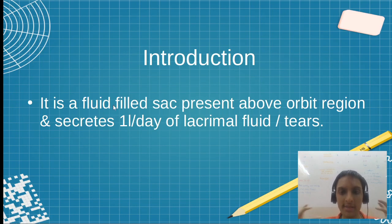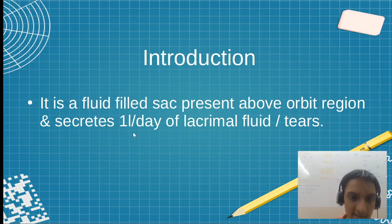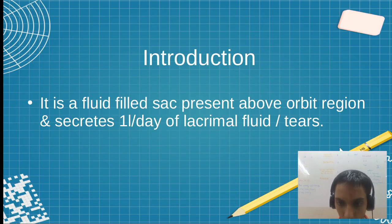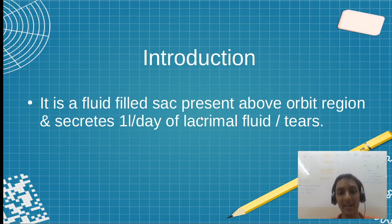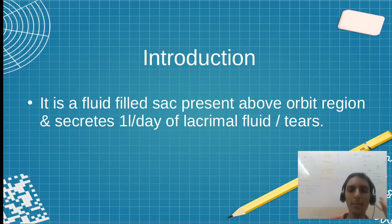We will see the introduction. What is this lacrimal apparatus? Basically, it is a fluid-filled sac present about the orbit and secretes lacrimal fluid — around 1 ml per day will roughly be secreted.